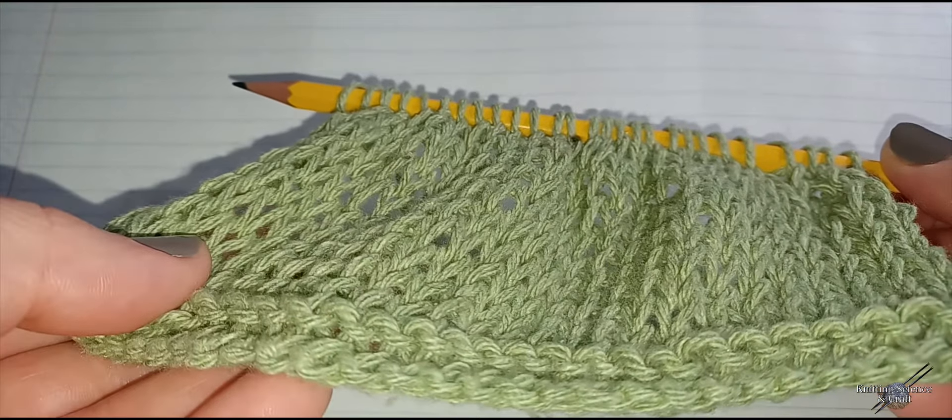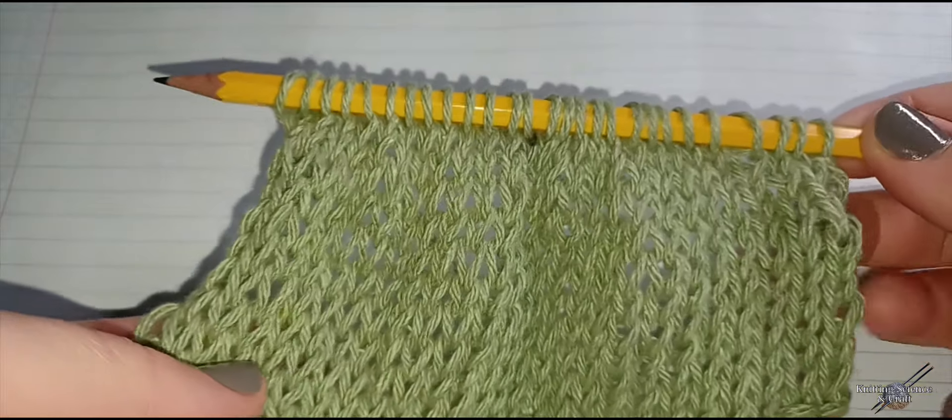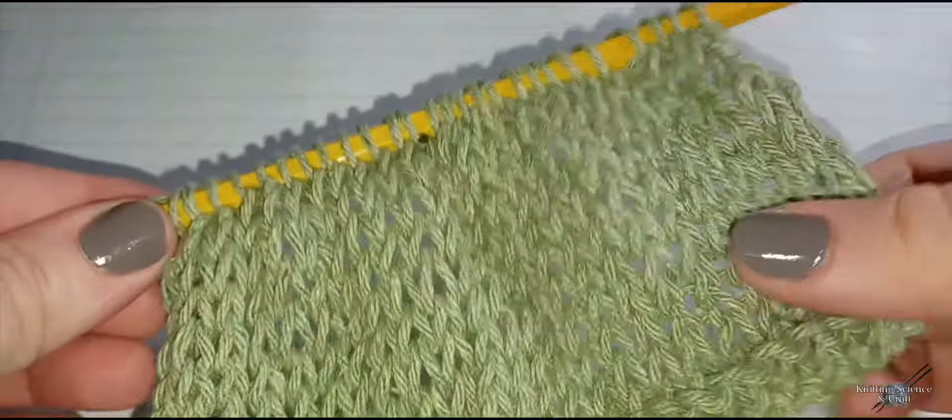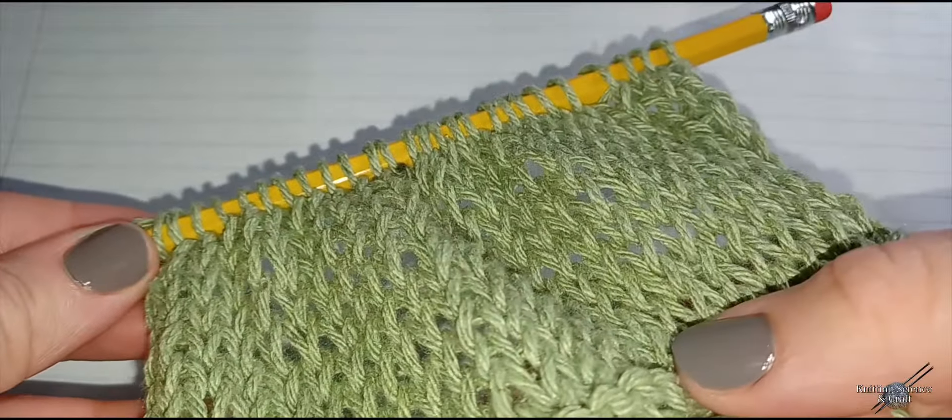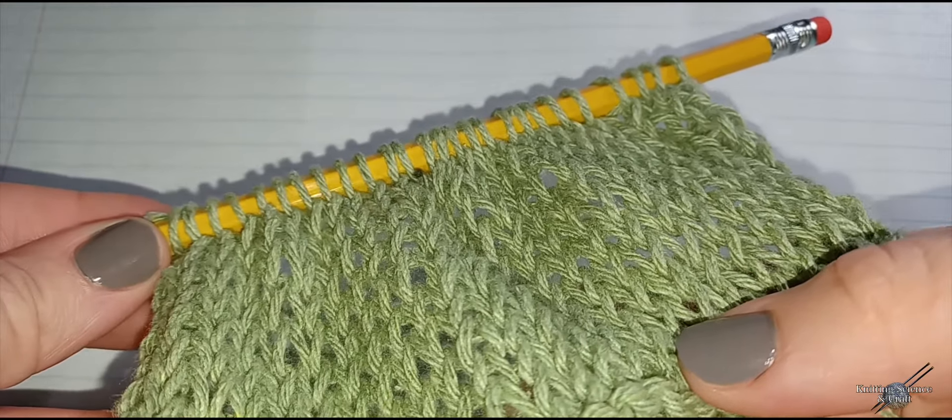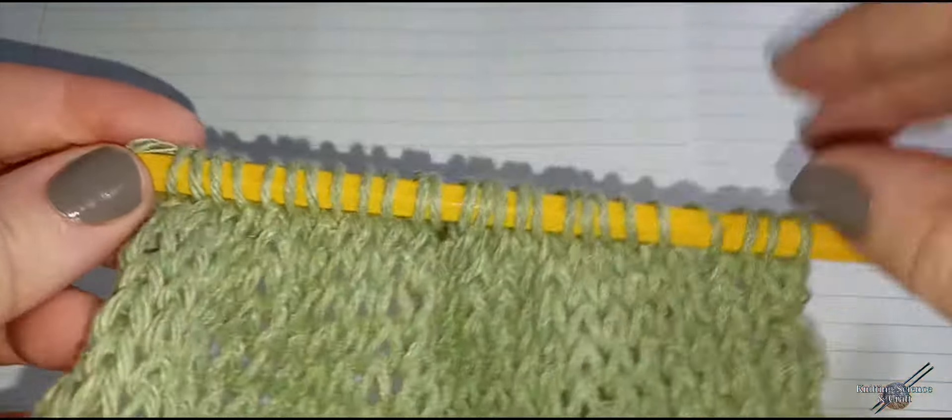So this is how the final product should look. I did a stockinette stitch that consists of a knit row and a purl row. I think it came out pretty good with pencils.